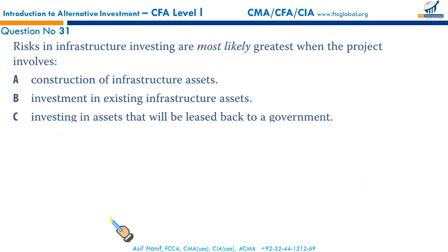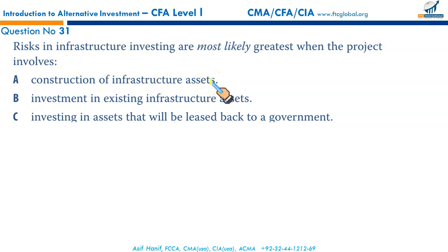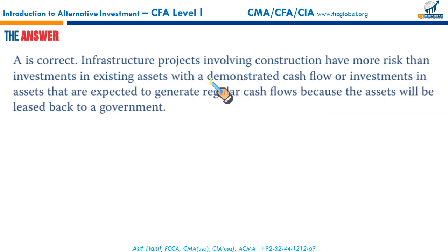Risks in infrastructure investing are most likely greatest when the project involves construction of infrastructure assets. Infrastructure projects involving construction have more risk than investment in existing assets, because these assets will be leased back to the government and will have less consistent cash flows than investment in existing assets. That makes A the correct option.